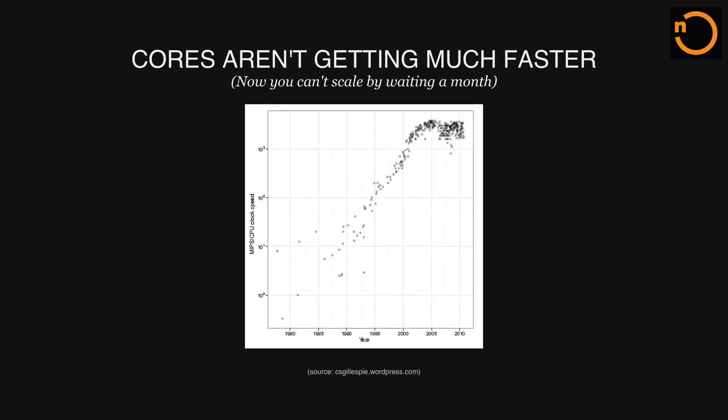The thing is that JavaScript, as you know it, is going to change very soon. Because cores aren't getting much faster. A few years ago you were coding a browser application in JavaScript and it was really slow, so what did you do to make it faster? You waited three months to release it — and that worked, because people's processors would get faster. But unfortunately we don't have that advantage anymore. Instead of having one core, we're having two, four, eight, 16, 20.